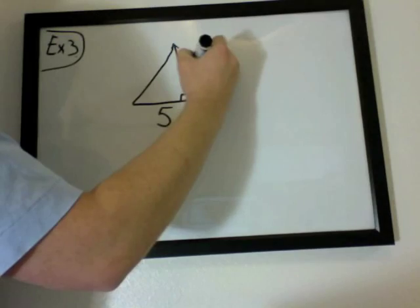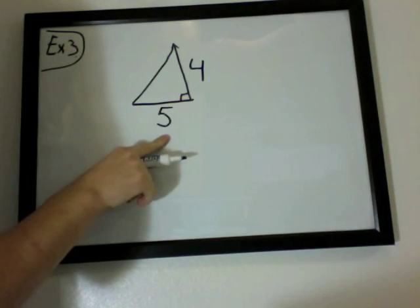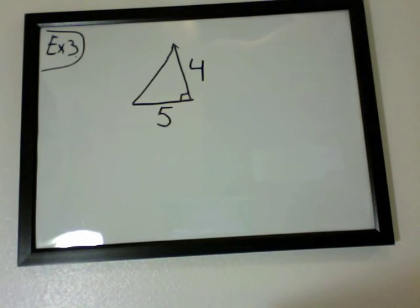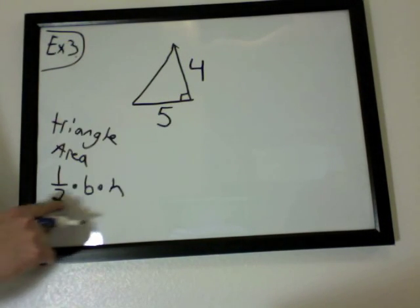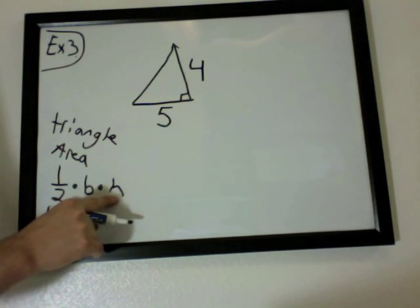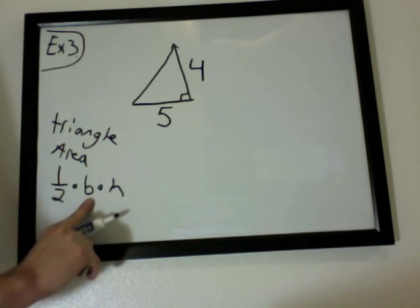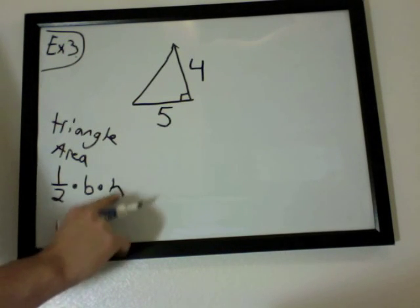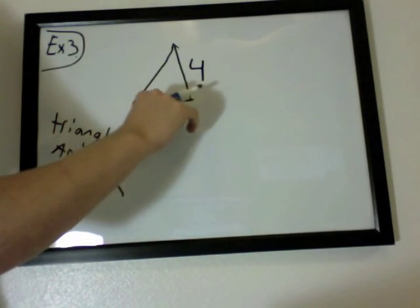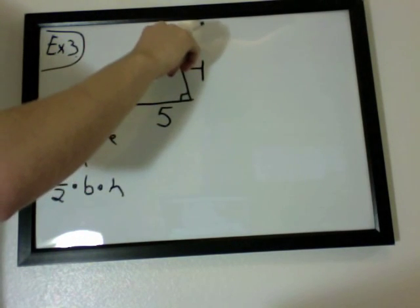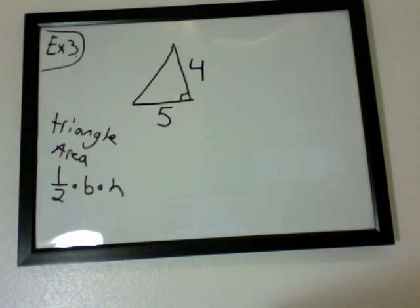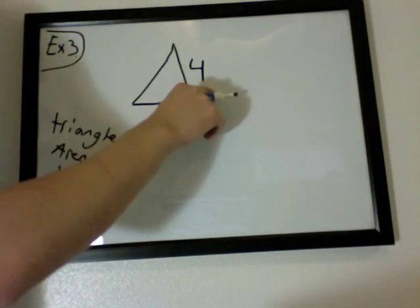Example 3, we'll be working with triangles. Now we're working with triangles, we need to know what the area formula is and how we get it. We'll say this length is 5 and this one is 4. So the triangle area is 1/2 base times height. B stands for the base and H stands for the height. The base is usually the one from the bottom and the height is whatever is going upwards. So the base is 5 and the height is 4.